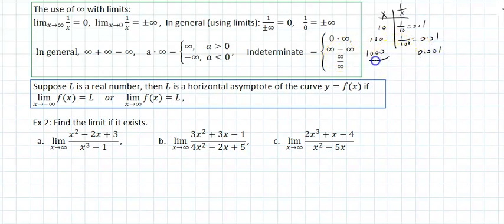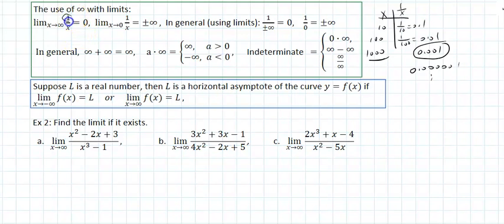I am taking the limit as x approaches infinity — I am still at 1,000, and 1 over x is already at 0.001. So as x increases, 1 over x decreases. The limit as x approaches infinity — any number divided by x as x goes to positive or negative infinity will yield the same result, because whether you say positive 0 or negative 0, that means it's 0.